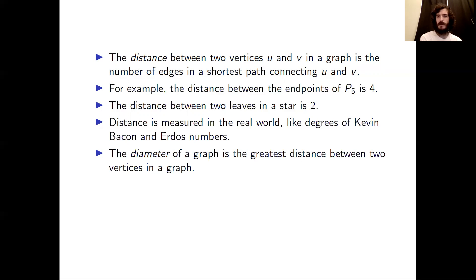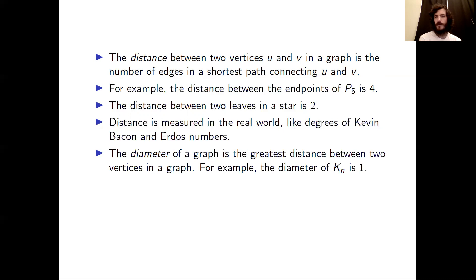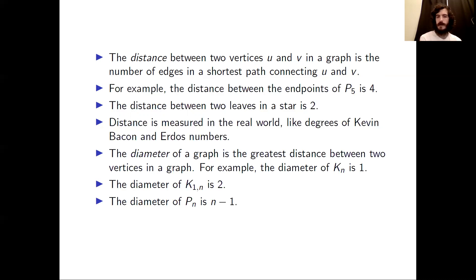Now that we've defined distance, we can define the diameter of a graph, which is the greatest distance between any two vertices in the graph. For example, any complete graph has diameter one (as long as it has at least two vertices). A star with at least two leaves has diameter two. The diameter of Pn, the path on n vertices, is n minus one — which we already saw for n equals five.